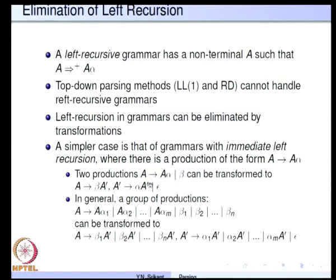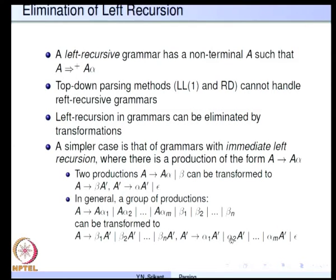This is immediate left recursion elimination — the resulting grammar does not have left recursion. More generally, if we have productions A going to A alpha1, A alpha2, ..., A alphaM, and other alternates beta1, beta2, ..., betaN without left recursion, we transform them to A going to beta1 A prime, beta2 A prime, ..., betaN A prime, and A prime going to alpha1 A prime, alpha2 A prime, ..., alphaM A prime, or epsilon.